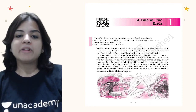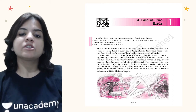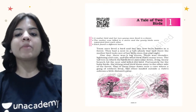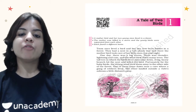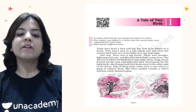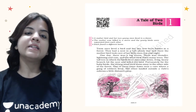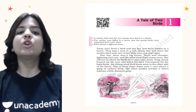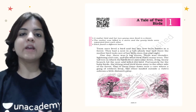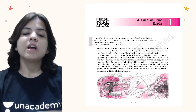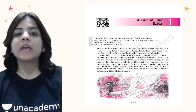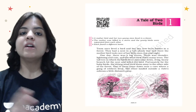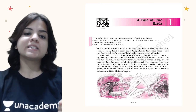Fortunately for the little birds, a strong wind blew them away to the other side of the forest. One of them came down near a cave where a gang of robbers lived. The other landed outside a Rishi's ashram, a little distance away. So these two birds landed in two different separate locations — one near the cave of robbers, and the other near a tree where a Rishi lived.